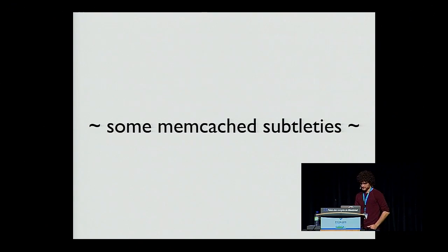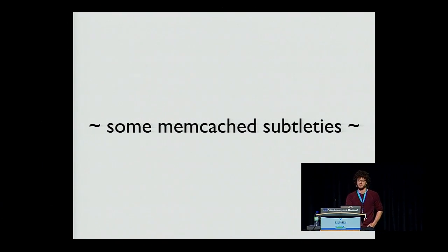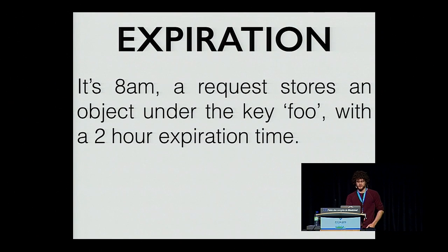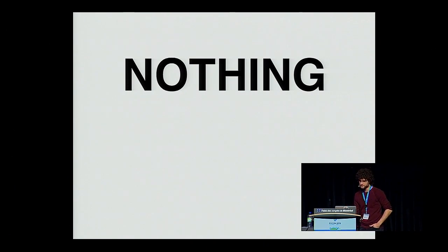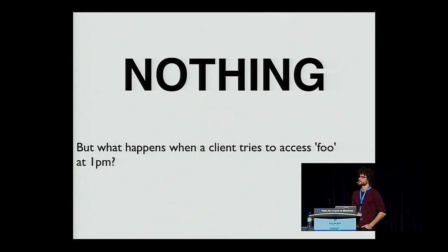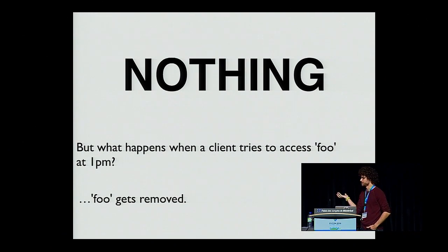A few memcached subtleties — let's dive into how memcached works internally. Expiration: it's 8 a.m. and a request stores an object under the key `foo` with a two-hour expiration. What happens at 10 a.m.? Nothing. It would be very expensive for memcached to sweep the cache every interval and remove expired keys. Instead, if the client tries to access the `foo` key at 1 p.m., memcached does the check at fetch time, sees the key is expired, removes it, and you get none as a result.